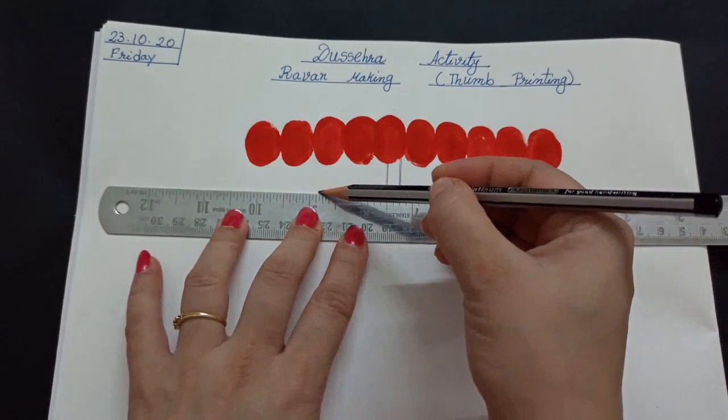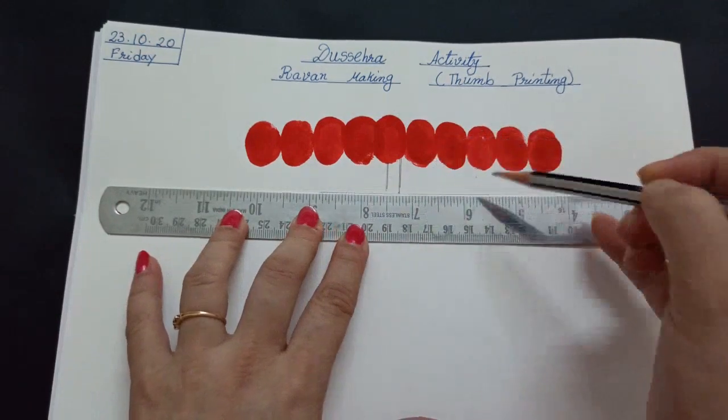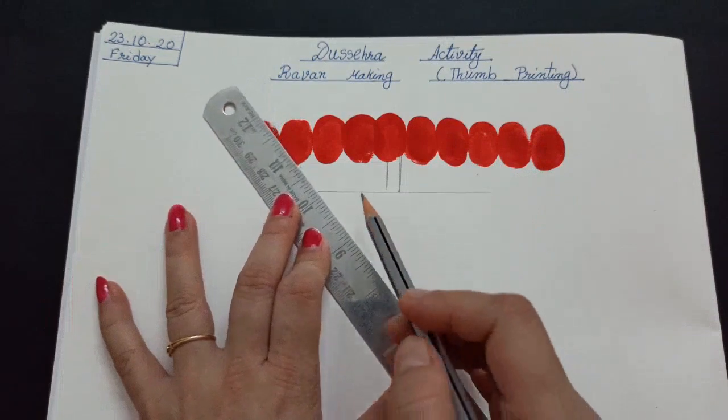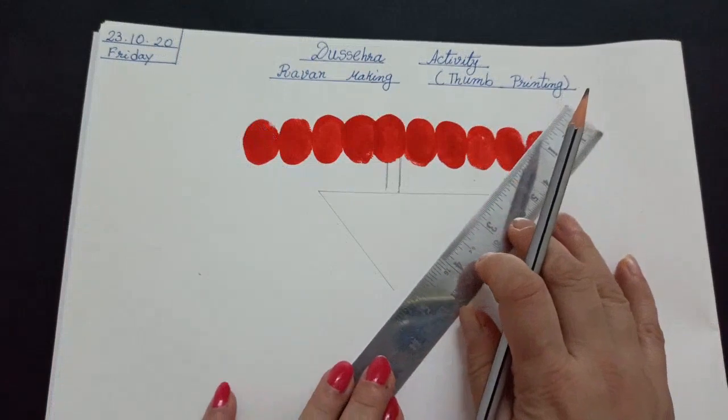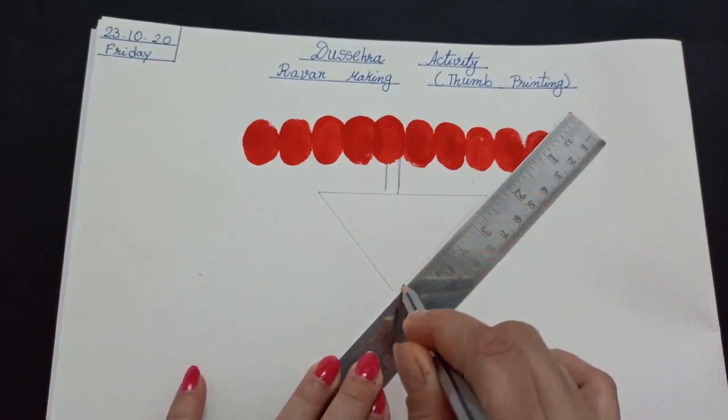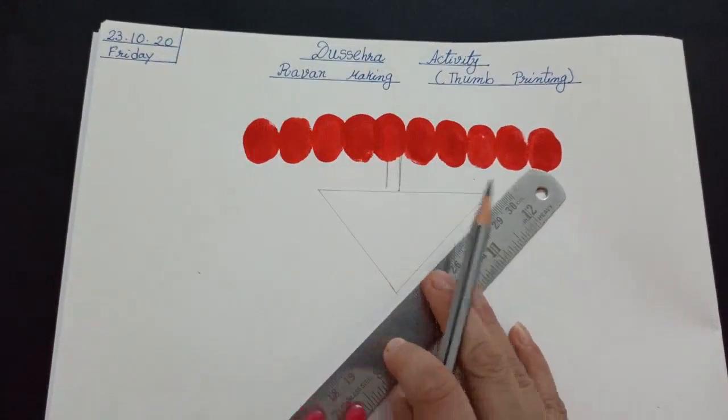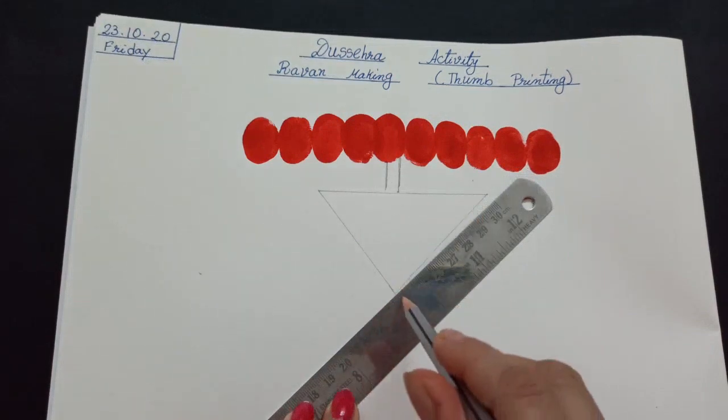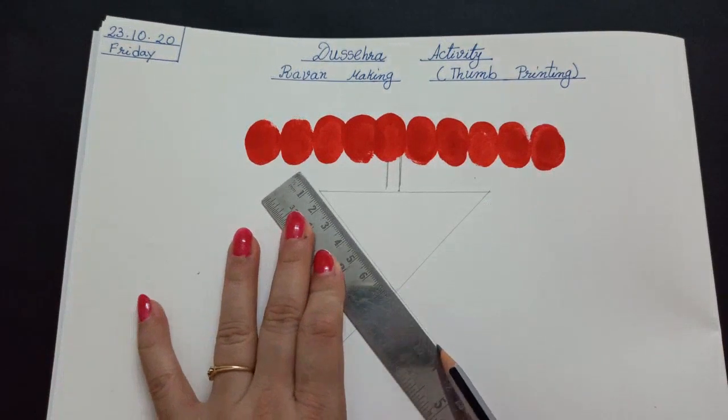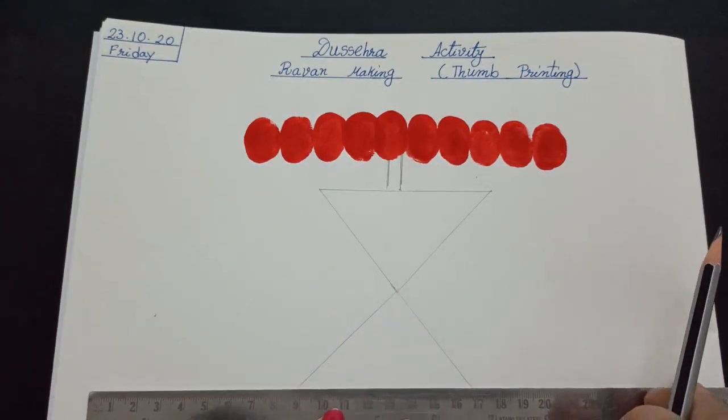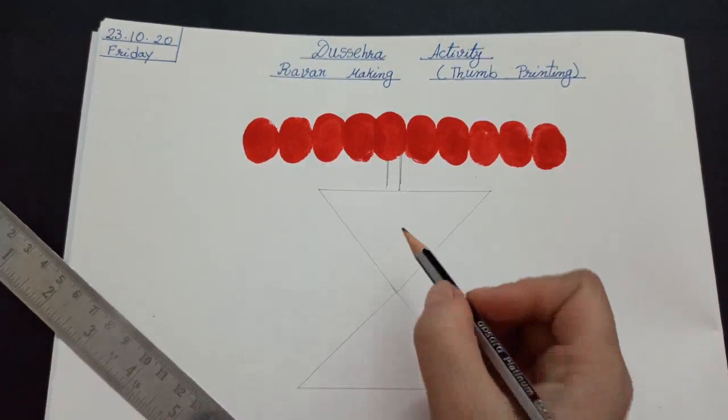Now, we will make Ravan's dress. For that, we will make triangle. Now, from here, another triangle. Now, from here, another triangle. This, this and this. This is Ravan's dress.